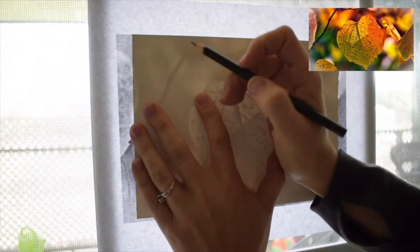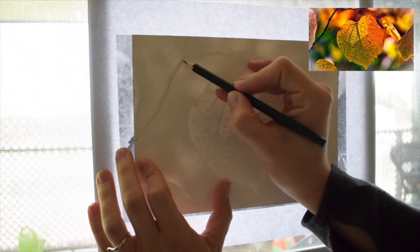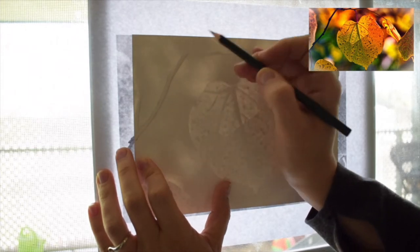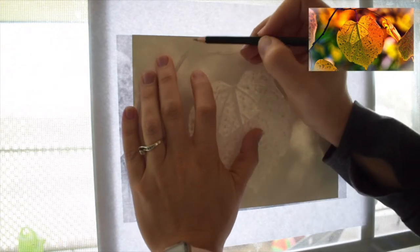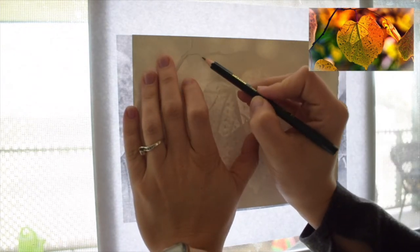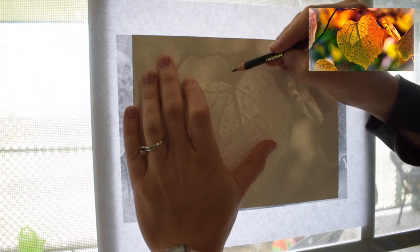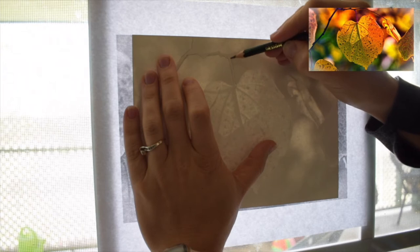One more way to trace if all you literally have is your picture is to hold it up to a window and put your paper over the top of it. Try to limit as much light from behind you as possible, so turn off any lights. That's going to maximize the amount of light that comes through your picture.